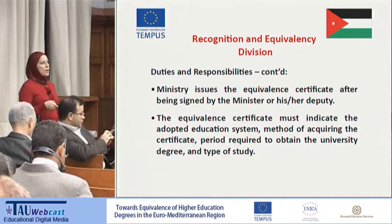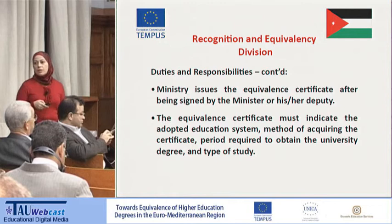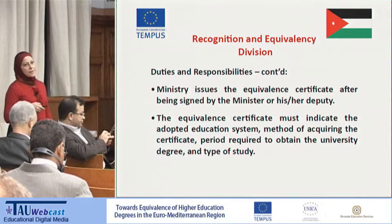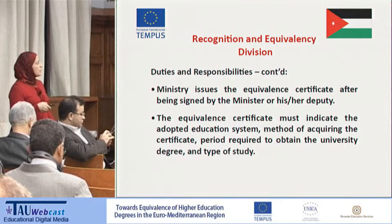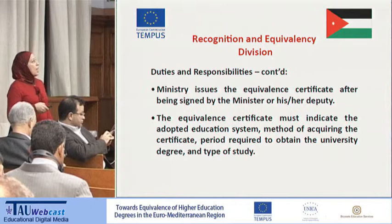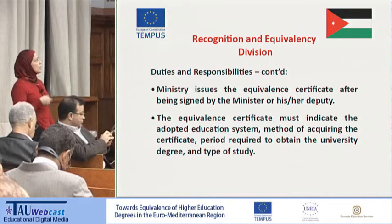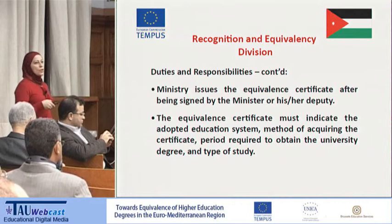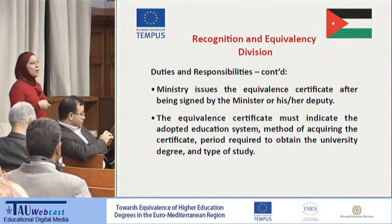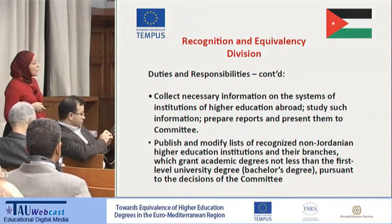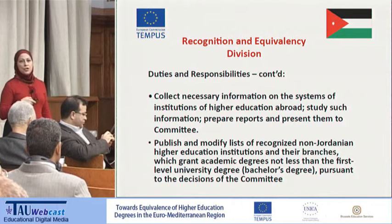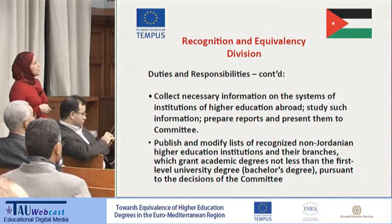The ministry issues the equivalency certificate after being signed by the minister or deputy. The certificate must indicate the adopted education system, methods of acquiring the certificate, the period required to obtain the university degree, and the type of study. This is because some countries produce BA graduates in three years, others in four, and some like Russia in five years — which we consider as a BA. Therefore, we must write the type and period of study. We now also mention whether the study was online, distance learning, open learning, or traditional.